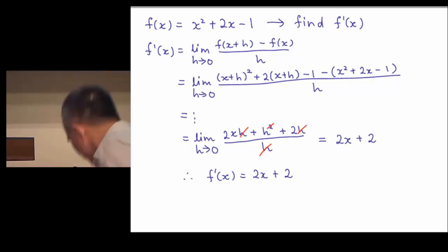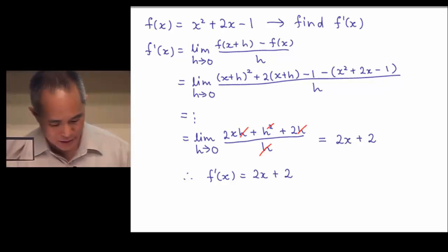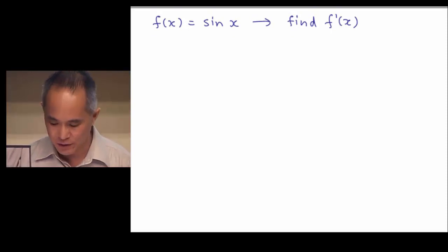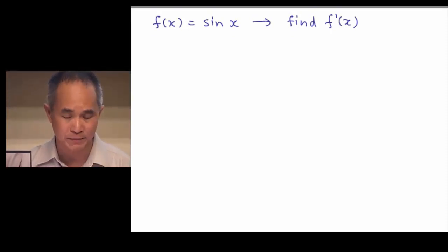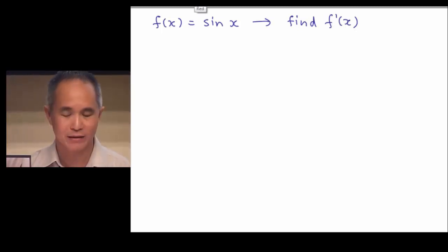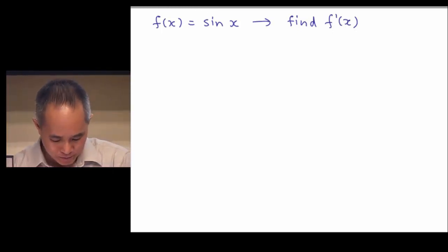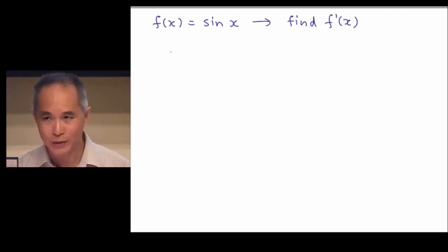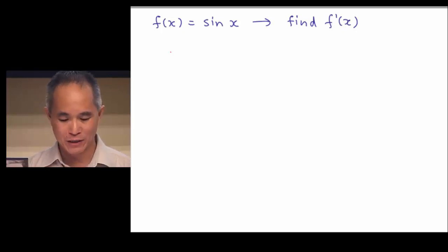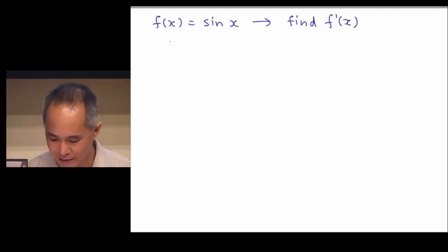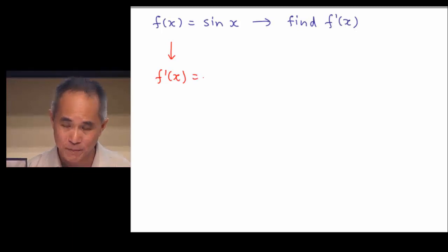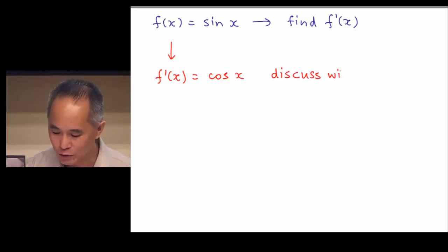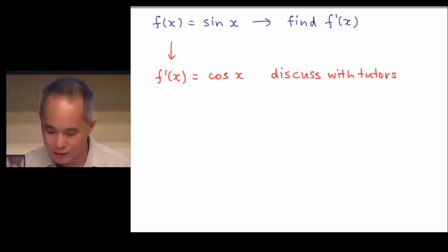The next one is slightly harder. In secondary school, we tell students that the first derivative of sin x is cos x. When students ask why, you might say don't ask, just take it as a rule. It's okay to say that if you really know why — the reason you tell the student not to ask is not because you don't know, but because they are not ready. If you haven't come across the actual derivation, it's a good idea to go and find out or discuss it with your tutors.